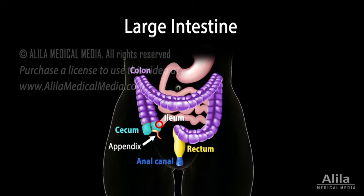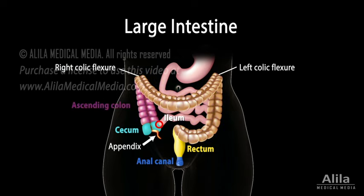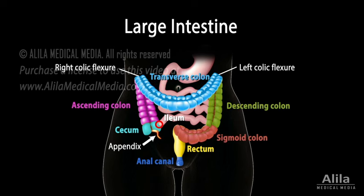The colon starts from the ileocecal junction and consists of four segments: ascending, transverse, descending, and sigmoid colon.